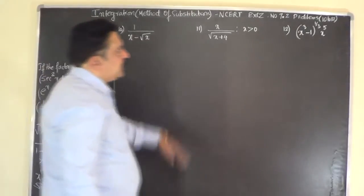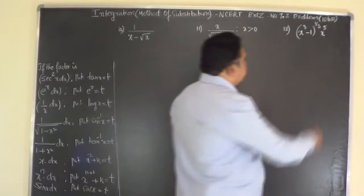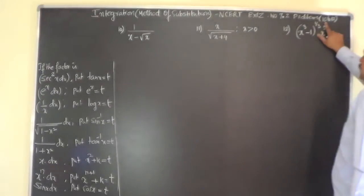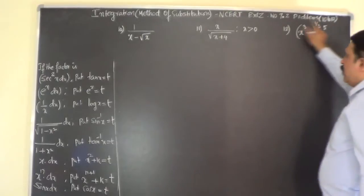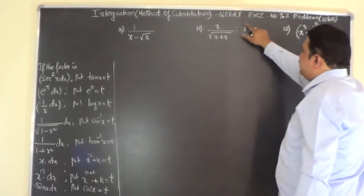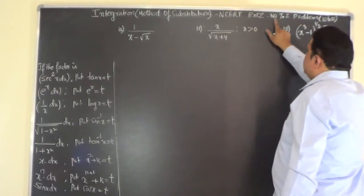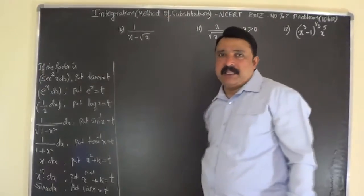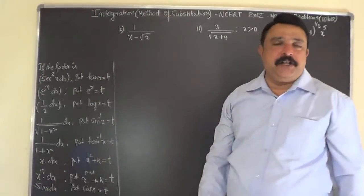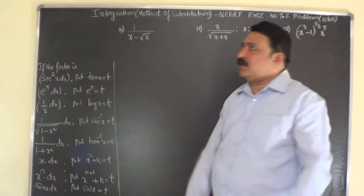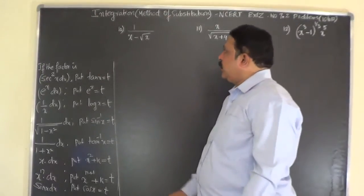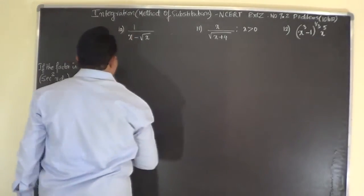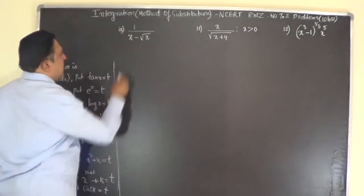We will now take the next three problems, problem numbers 10, 11, and 12 of NCERT exercise number 7.2 on integration by the method of substitution for class 12.